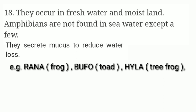Amphibians occur in freshwater and moist land. They are not found in seawater, except a few. They secrete mucus on the body to reduce water loss. Examples include Rana (frog), Bufo (toad), Hyla (tree frog), Salamandra (tailed amphibian), and Ichthyophis (limbless amphibian).